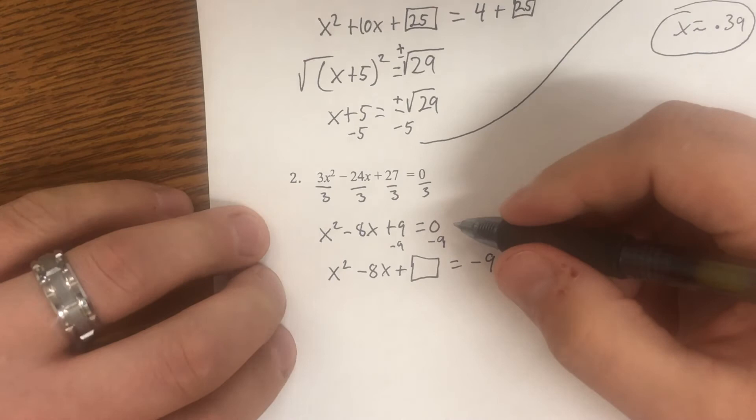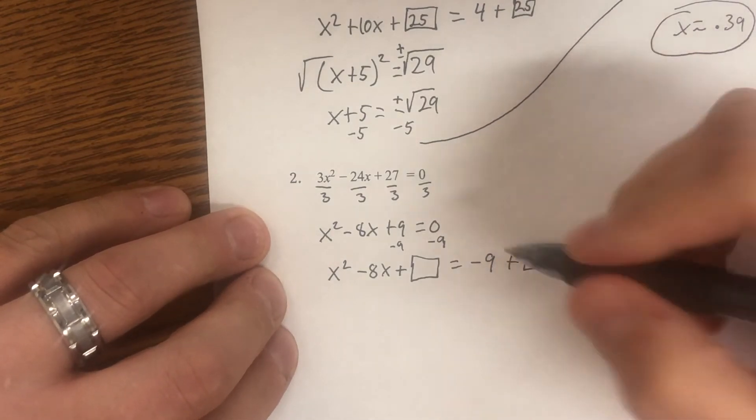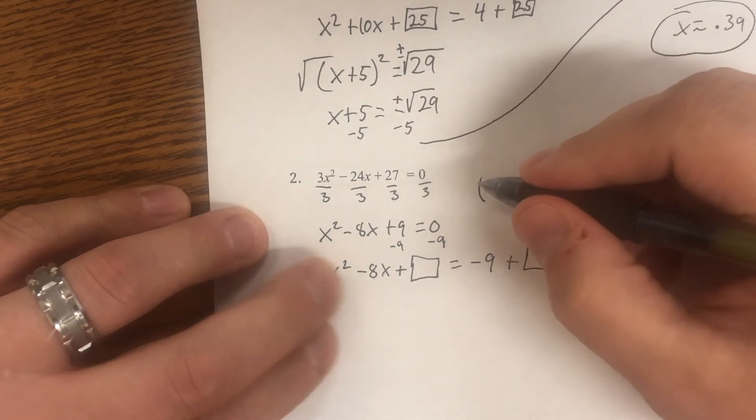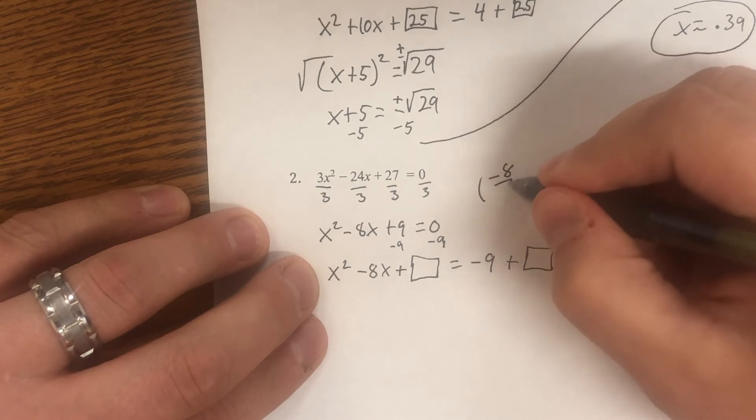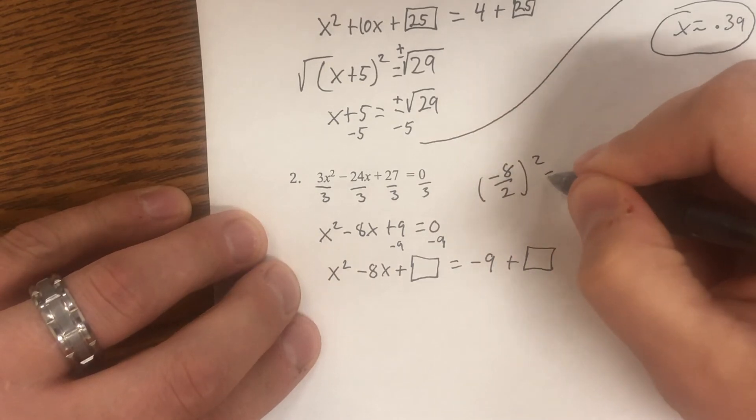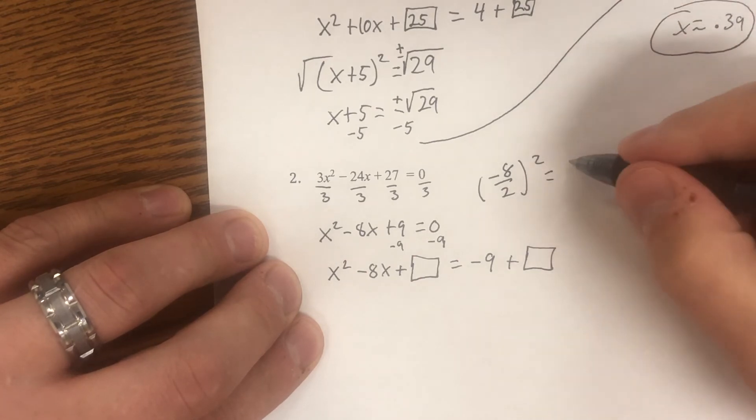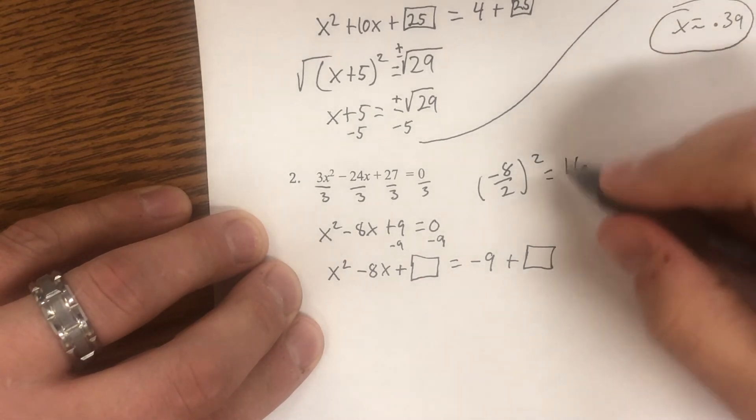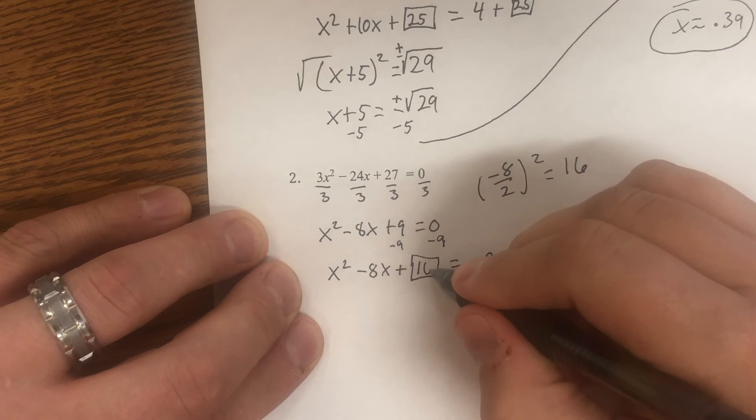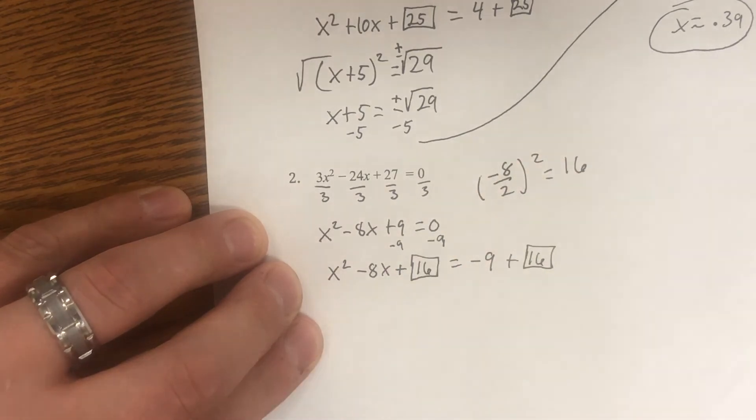Now to complete the square. B squared, or sorry, B over two squared. In this case, B is negative eight. So we have negative eight over two squared. Negative eight over two is negative four. Negative four squared is positive 16. You should always get a positive number here. Plus 16 plus 16. That's going in.